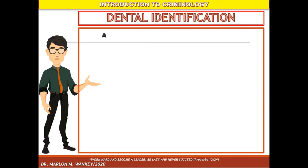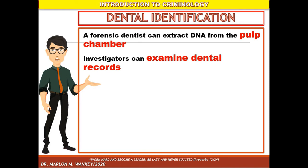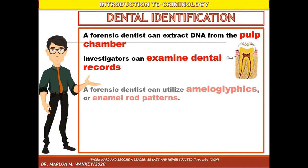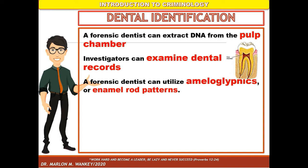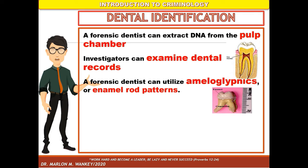There are several methods for using dentistry to identify a person. First, a forensic dentist can extract DNA from the pulp chamber to cross-match and identify a victim. Second, investigators can examine dental records to match them to a corpse or to match a bite mark to a perpetrator. The more recent the antemortem records, the more reliable the comparative mode of identification. The possibility of two persons having the same dentition is quite remote. A forensic dentist can utilize ameloglyphics or enamel rod patterns. The enamel of the teeth is the hardest substance of the body and may outlast all other tissue during putrefaction.